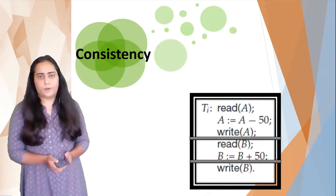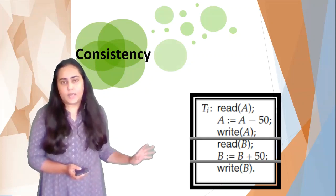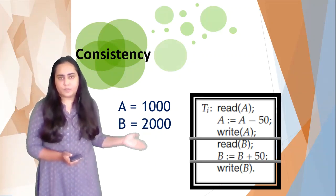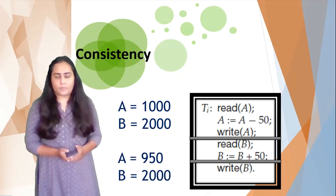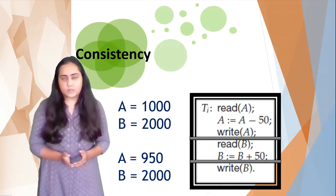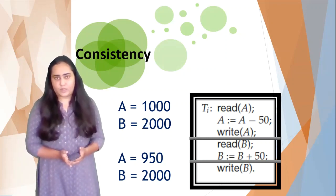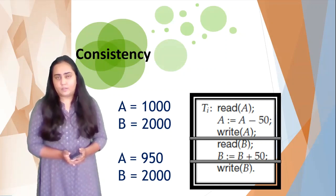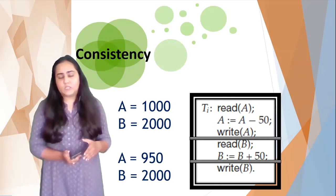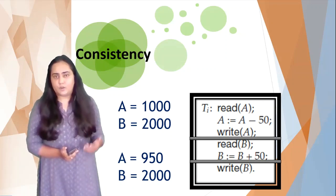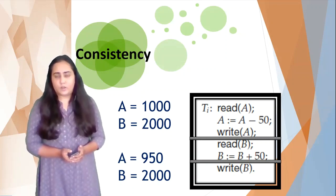Going back to our earlier example: if atomicity is not followed, the original values of A = 1000 and B = 2000 could become A = 950 and B = 2000 after a failed transaction. The total of A and B should be 3000, but it becomes 2950 — 50 less — meaning somebody lost money. This is an example of incorrect data in the database, which is why you must follow atomicity and handle concurrent transactions.